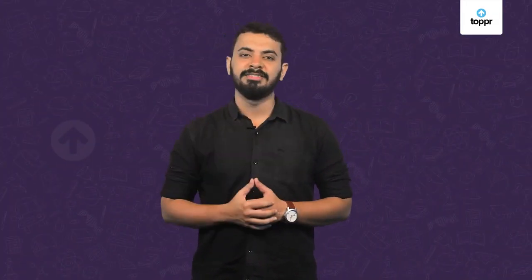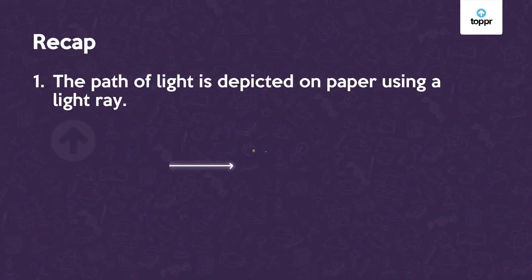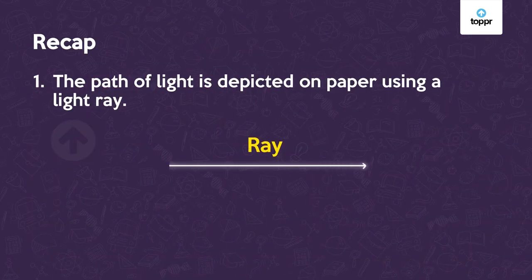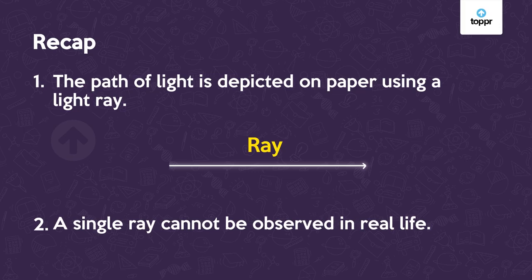Now let's look at a brief summary of what we learned. The path of light is depicted on paper using a light ray. A single ray cannot be observed in real life.